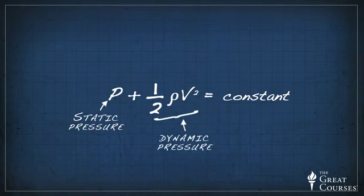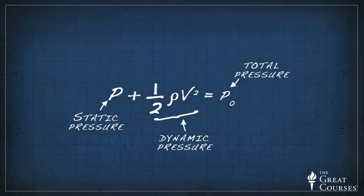We call this second term the dynamic pressure. The summation of these two, static pressure plus dynamic pressure, is called total pressure, which is always constant under the conditions where the Bernoulli equation is valid.